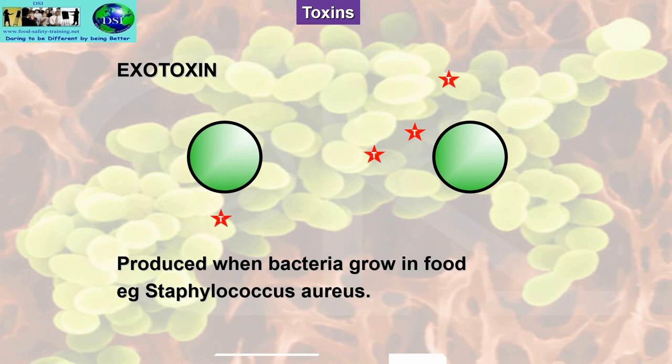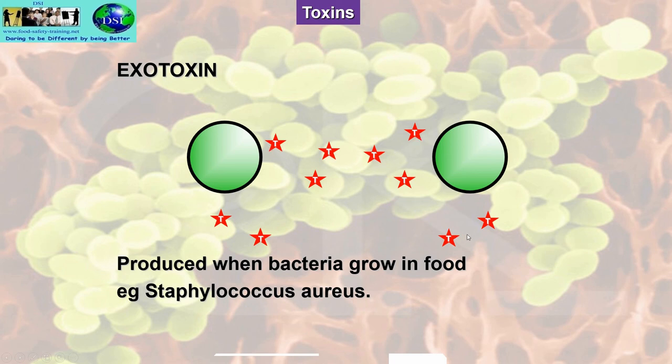Toxins are organic poisons produced by animals, plants, and bacteria. The first type is an exotoxin — poisons produced when the cell multiplies or grows in food. Staphylococcus aureus, for example: if we cough or sneeze over food, we release Staphylococcus aureus because we are the repository for it — they're on our skin, in our nose, our mouth. As the bacteria grow on high-risk food at warm temperatures, they give off waste products called exotoxins.